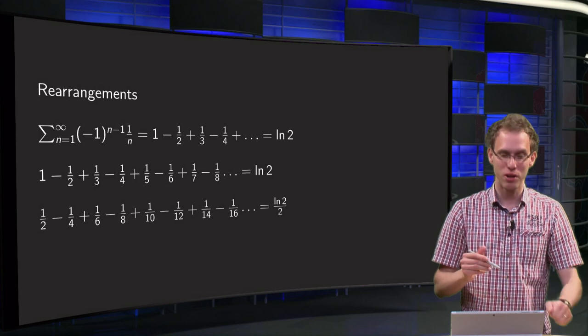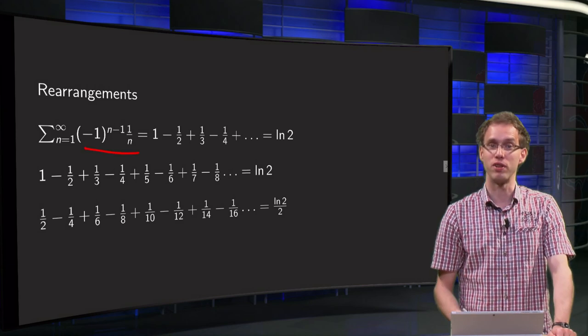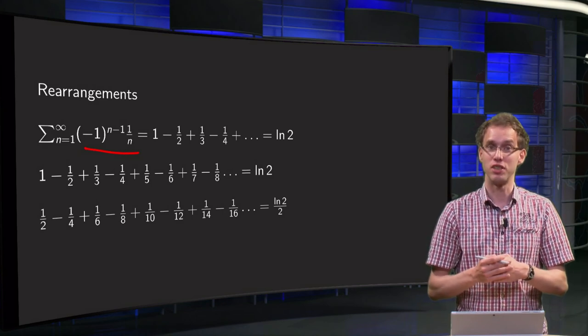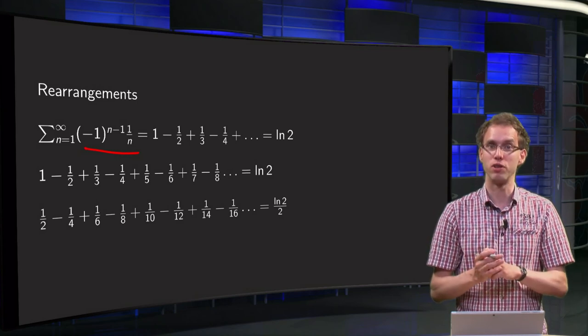We will use our conditionally convergent series (-1)^(n-1) times 1/n. We have seen previously that this series is convergent due to the alternating series test, but not absolutely convergent.